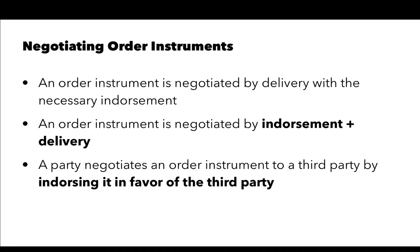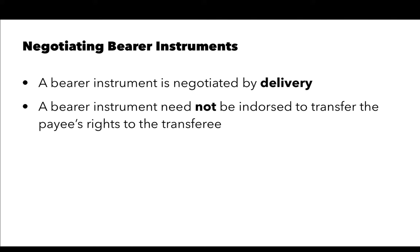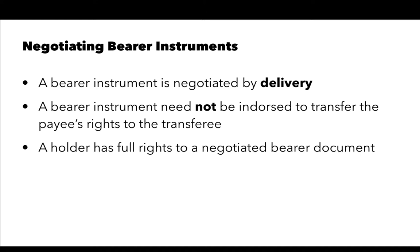If a party endorses an order instrument, it becomes a negotiation and not an assignment. Bearer instruments, by contrast, are negotiated simply by delivery — delivery of the document from the transferor to the transferee. There is no need for endorsement. A bearer instrument need not be endorsed to transfer the payee's rights to the transferee. A holder has full rights to a negotiated bearer document.